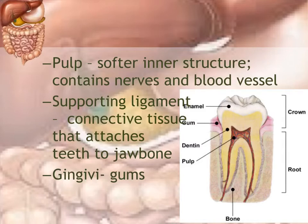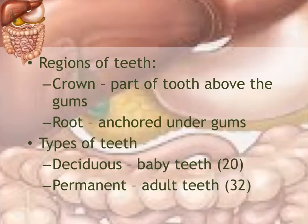Gingiva is another term for the gums, which surround the base of the teeth. The regions of the tooth: the portion above the gum is called the crown, and the portion underneath the gum is called the root — the part you don't see.